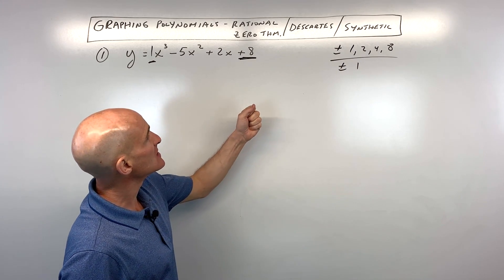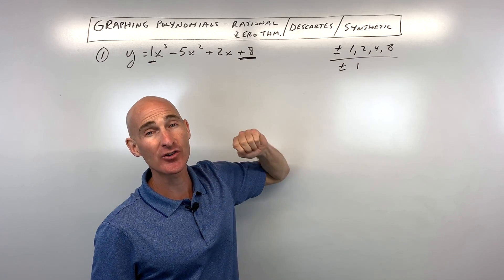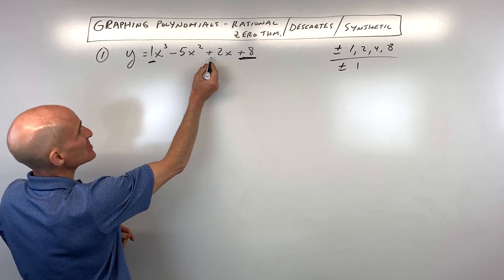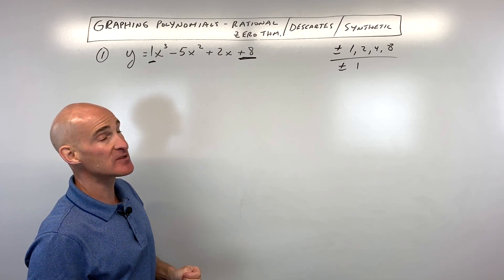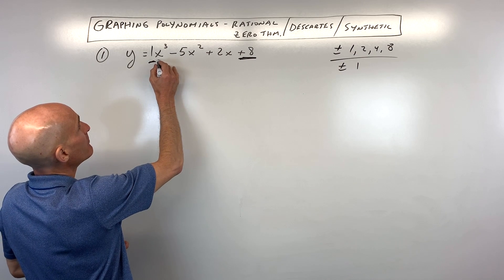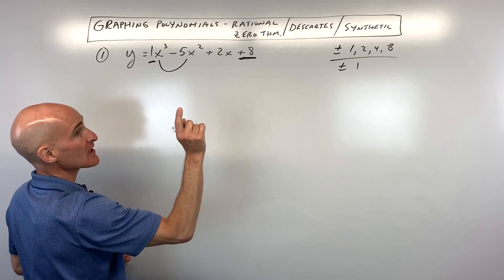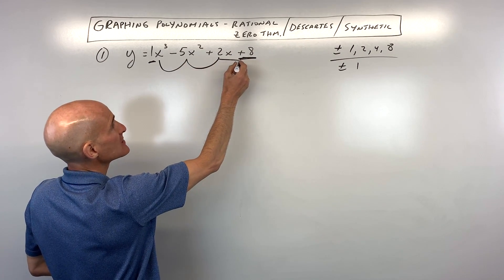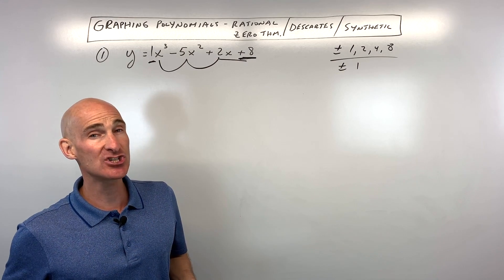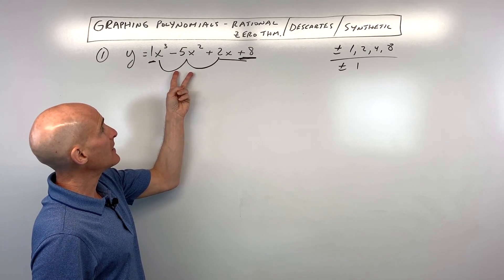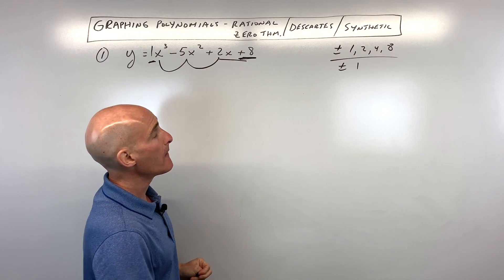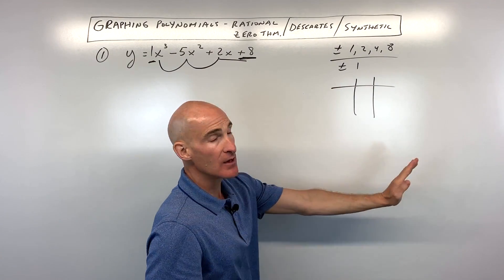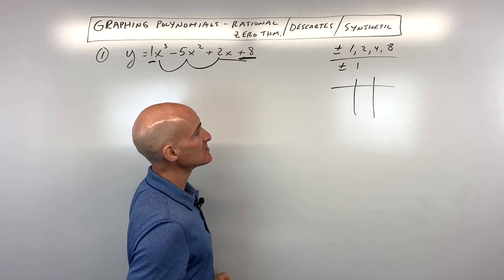The next thing we want to do is see if we can narrow it down further by using Descartes' rule of signs. The way Descartes' rule of signs works is we look at the sign changes — like positive to negative or negative to positive — that's considered a sign change. So here we have a positive x cubed to negative 5x squared, that's one sign change. Negative 5x squared to positive 2x, that's another sign change. Positive 2x to positive 8 — those are both positive, it didn't change signs. So we have a maximum of two positive zeros, meaning it's crossing to the right of the y-axis.